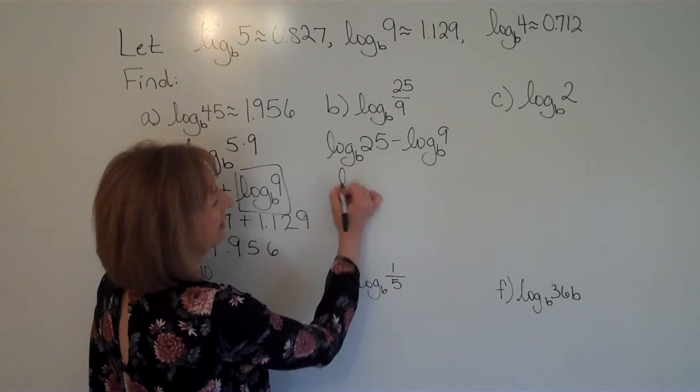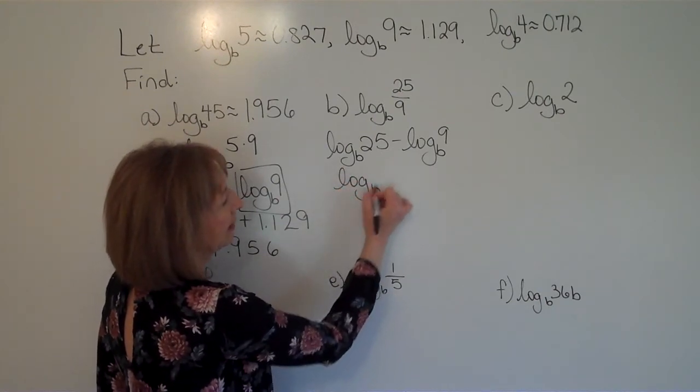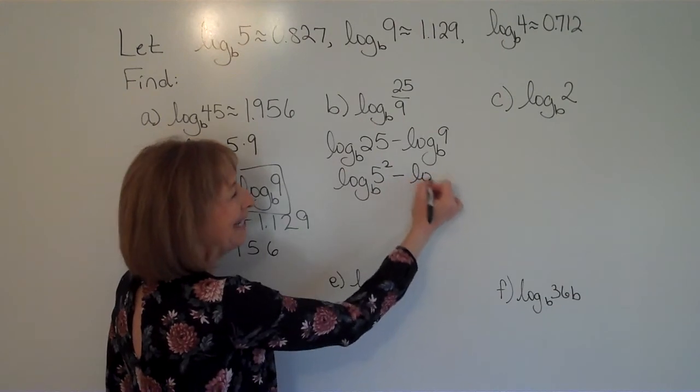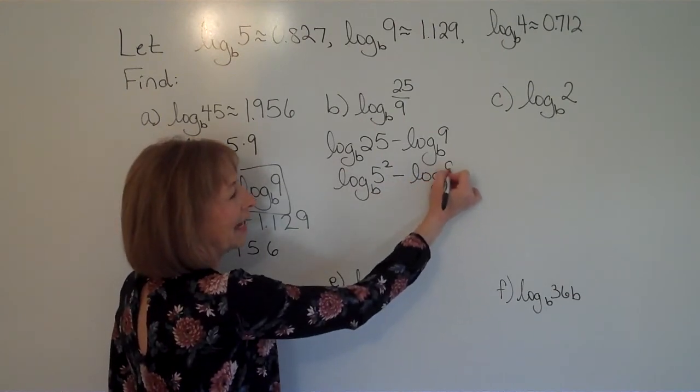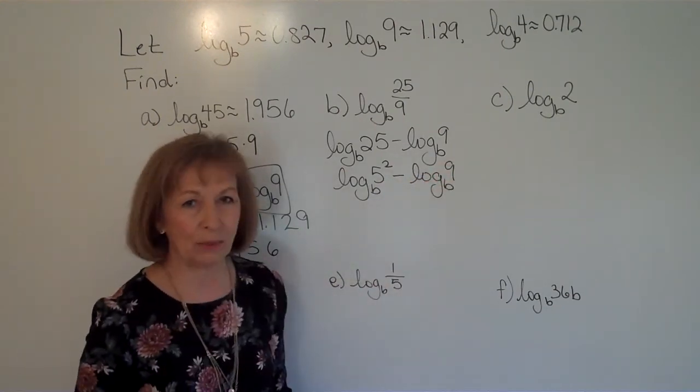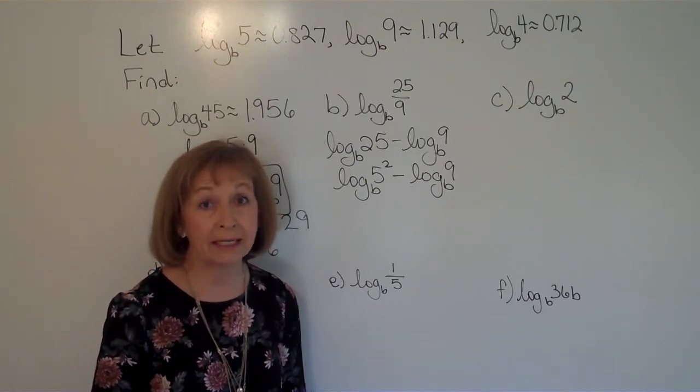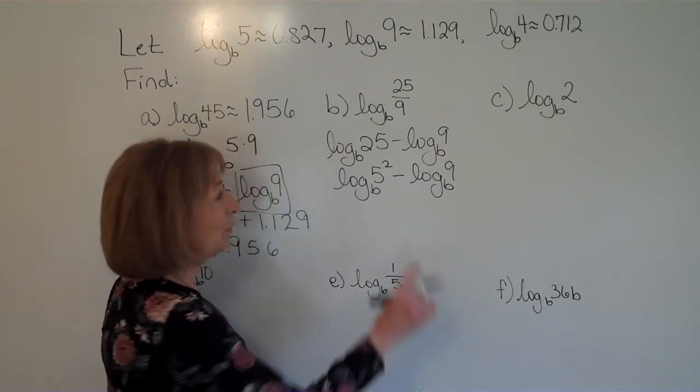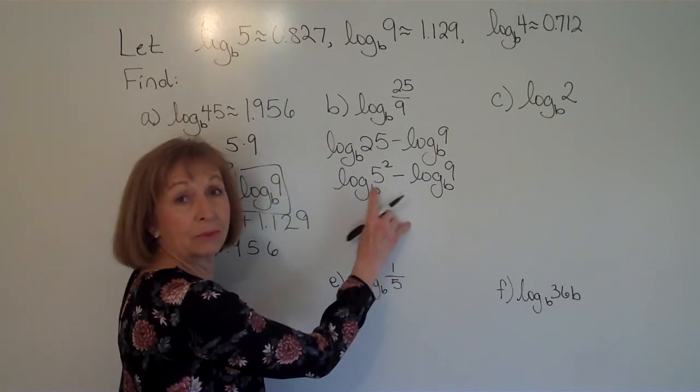But 25 is 5 squared. And I do have a log base b of 5. So we're going to write this as log base b of 5 squared minus, and I'm going to leave this one as a log base b of 9. I don't want to go to 3 squared on 9 because I don't know the log base b of 3. But I do know the log base b of 9.